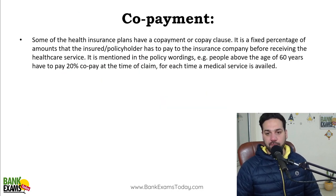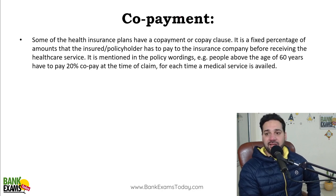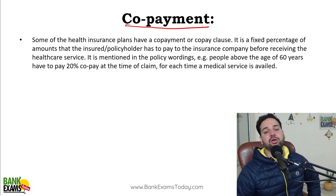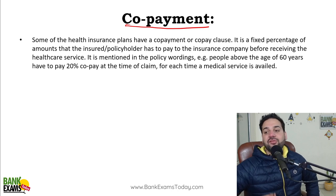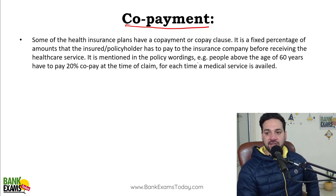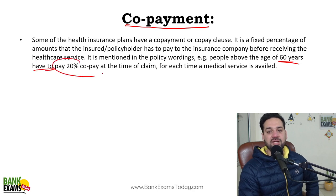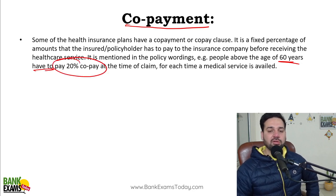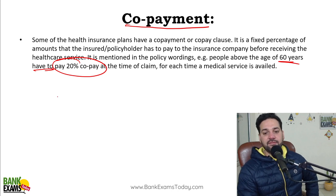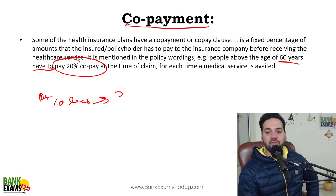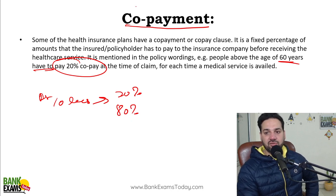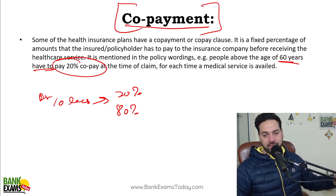Co-payment: as the name suggests, the patient or insured is also making some payment — a fixed percentage. In some policies it clearly states that for people above the age of 60 years, you have to pay 20% co-pay or 30% co-pay. So if medical expenses are 10 lakhs, 20% has to be co-paid by the patient and 80% would be paid by the insurance company. That is known as co-pay or co-payment.